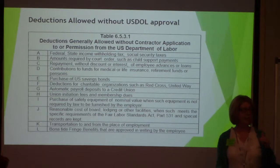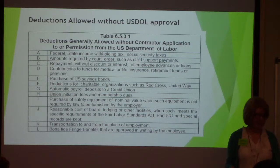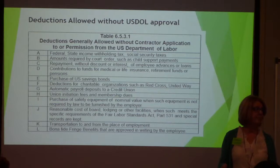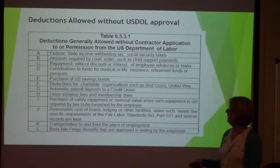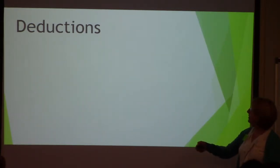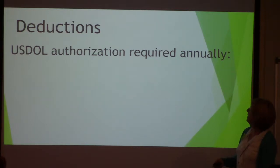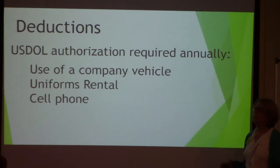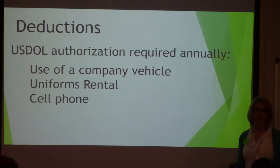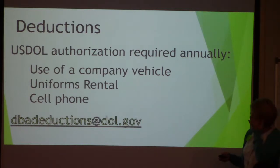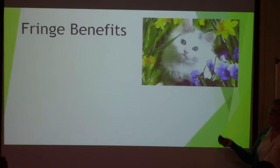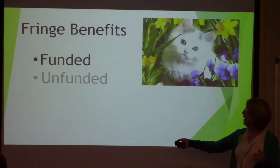USDOL re-looked at how we're asking for documentation to support fringes. As long as it's a bona fide fringe benefit referenced in the compliance manual or field guidance from the Wage and Hour Division, the employee doesn't need to opt in as long as it meets the wage position and the state's minimum. You can't lower their rates. The USDOL authorized deductions are required annually. You need USDOL approval to deduct use of a company vehicle, uniform rental, or cell phone — they usually allow it, but they want to make that call. Fringe benefits can be funded or unfunded.